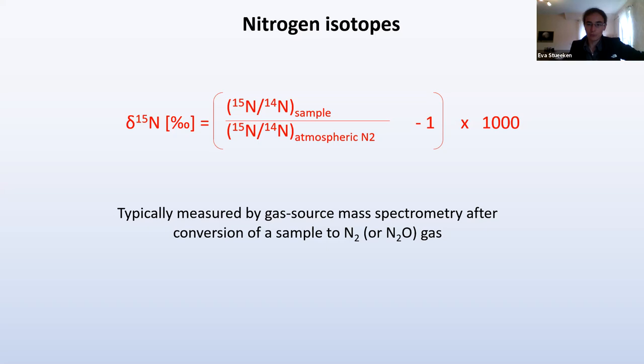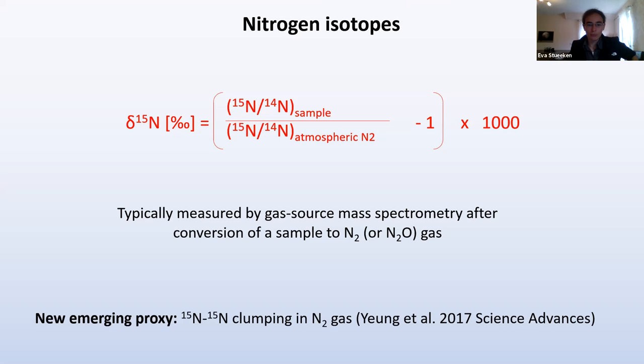What I'm not going to talk about is this newly emerging proxy, which is 15N-15N clumping, relevant for N2 gas. There was a paper in 2017 that was among the first to explore this, looking at clumping in the modern atmosphere, and since then it's been applied to some volcanic gases. If you're interested, I would point you to the reference by Yang et al.